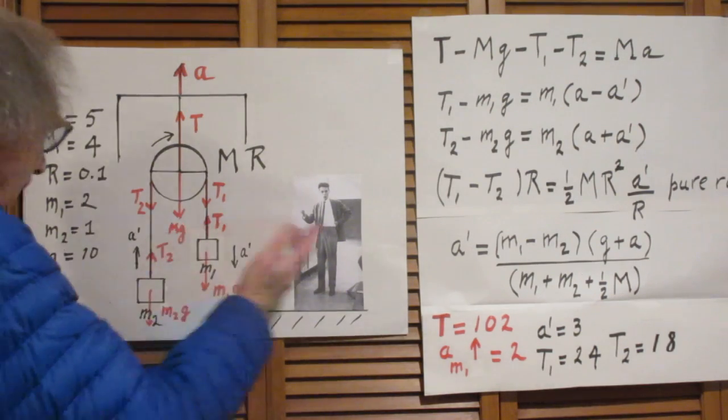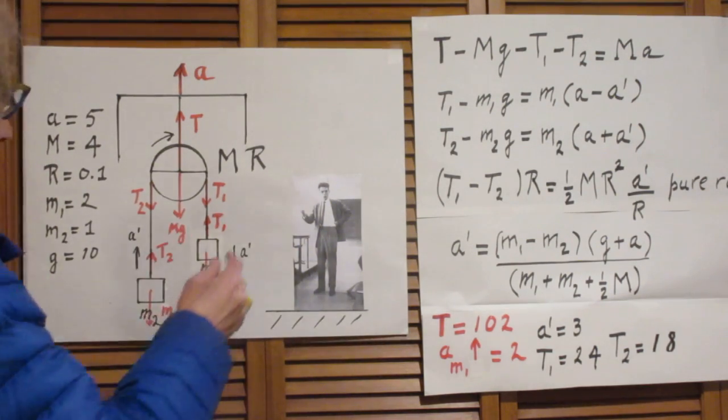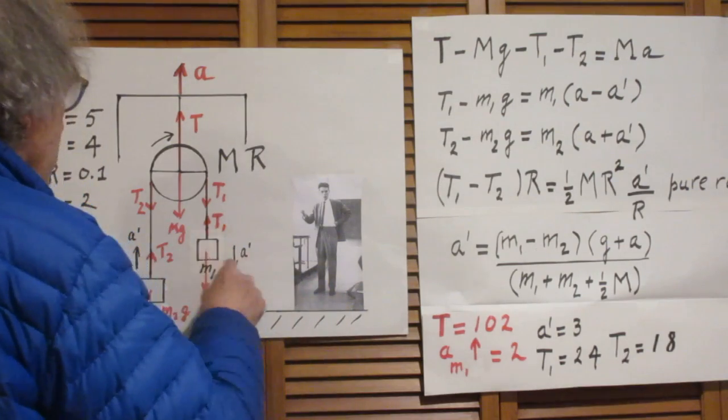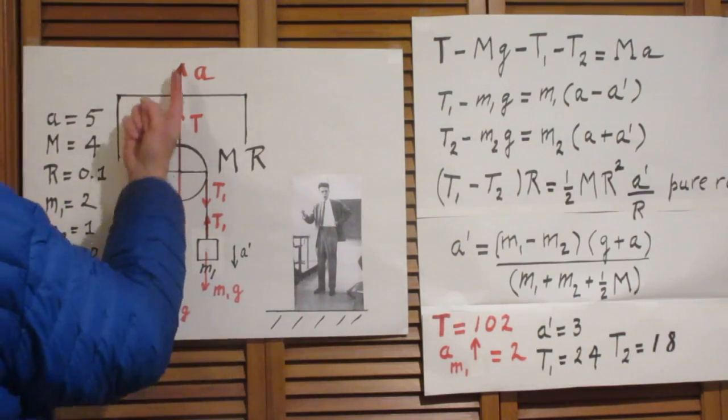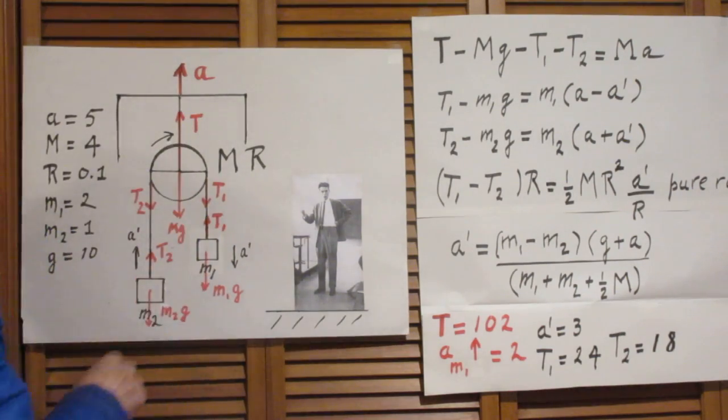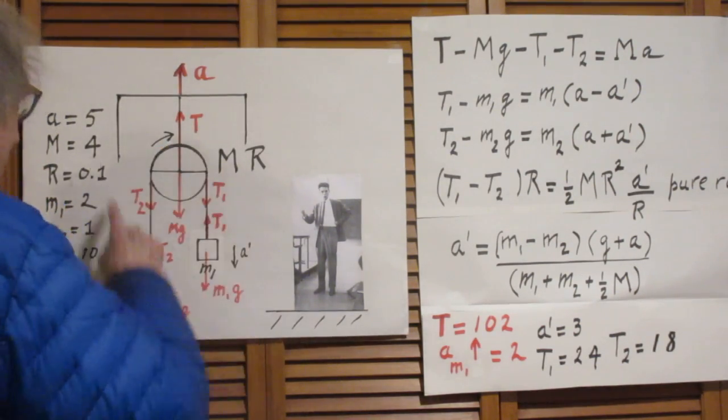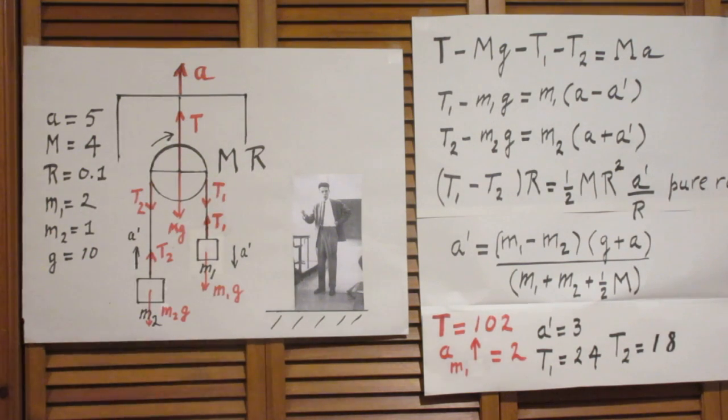Now of course, if later on we want to know what the acceleration is of this object as seen by Walter, we have to add vectorially this a. But these a primes are inside the elevator.